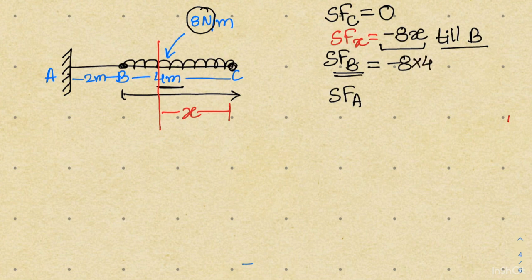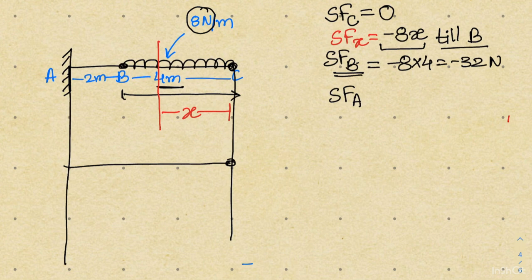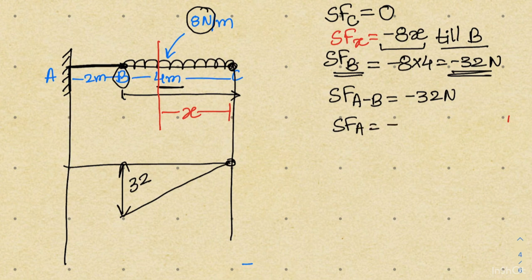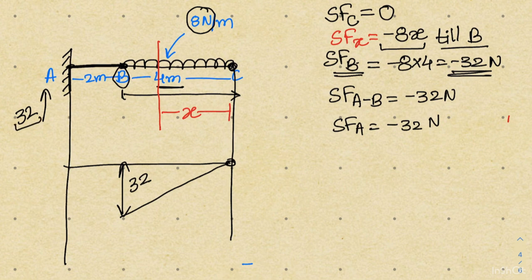At point B, x equals 4 meters, so the shear force at B is minus 8 times 4, which is minus 32 newton. In the distribution, the shear force starts at 0 at point C, gradually increases, and reaches minus 32 newton at point B. Beyond point B there is no additional load, so whatever shear force exists at point B will remain the same. The shear force from B to A remains constant at minus 32 newton.